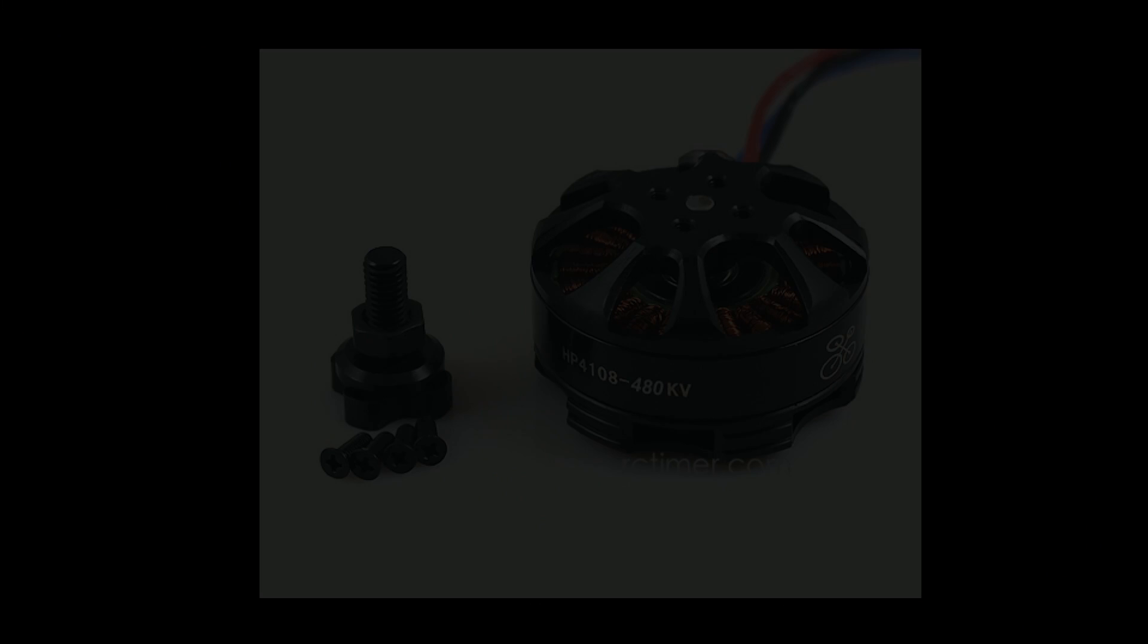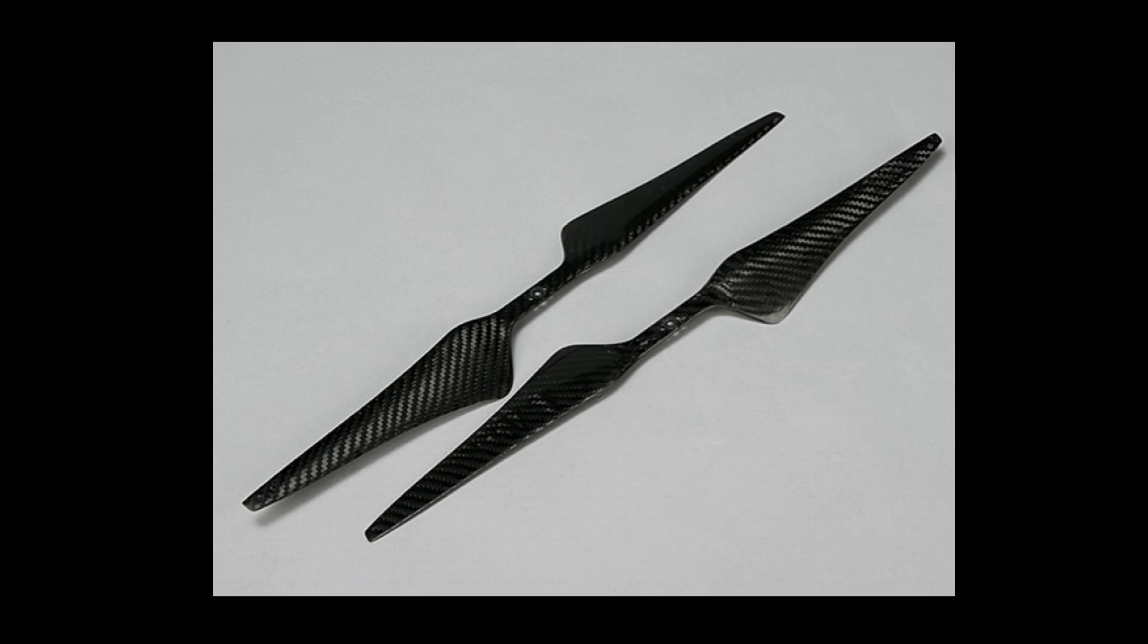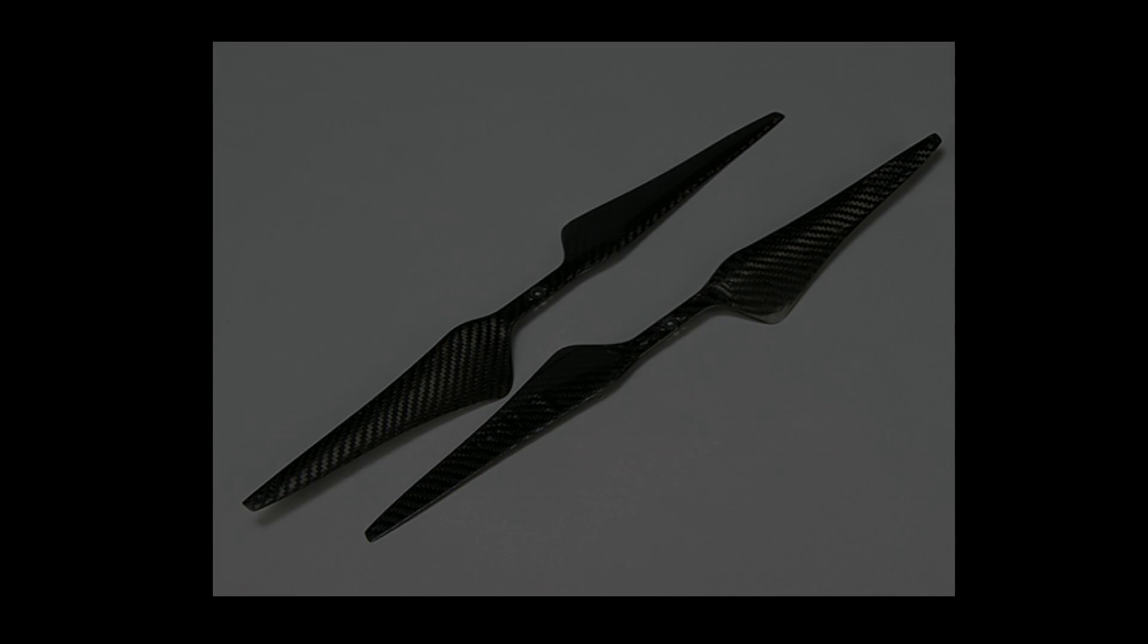If efficiency and long flight times are important to you, select low KV motors driven by higher voltage batteries. Use a large diameter prop but be aware that larger props can cause greater vibration and need stronger and more robust frames to support them. Large propellers and low KV motors are best for larger machines that are designed to lift heavy cameras.